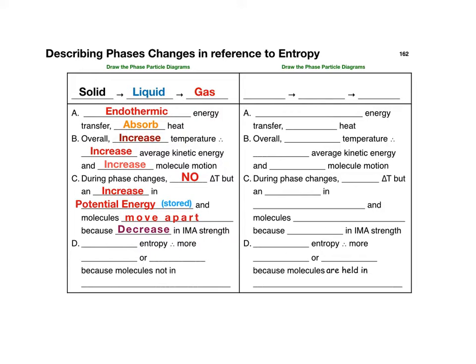So with an increase in temperature, an increase in movement, and the molecules moving apart, we notice an increase in the entropy, meaning that there is more chaos or randomness in the system, because the molecules are not in fixed positions.